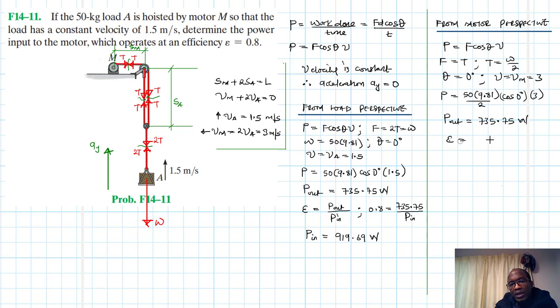And then we know that the efficiency is just equal to P out divided by P in. This is 0.8 equal to 735.75 divided by P in. P in therefore is just going to be equal to the same value which is just 919.69 watts.